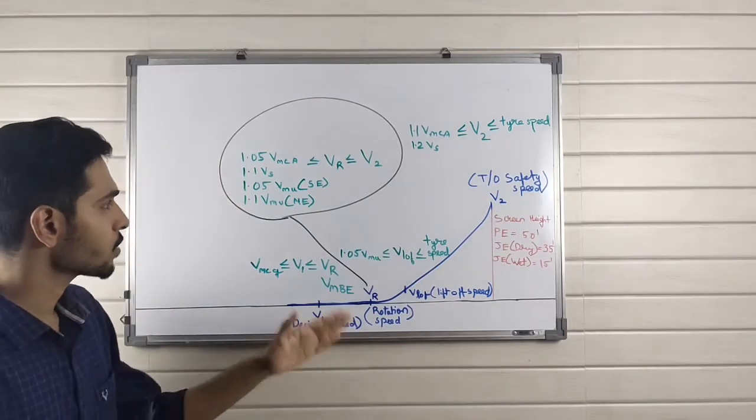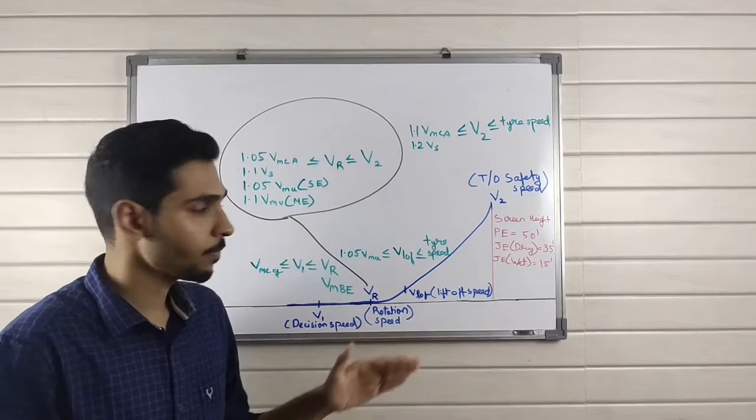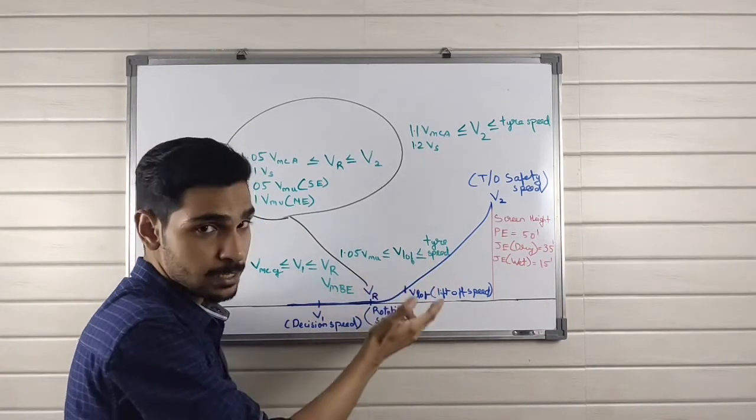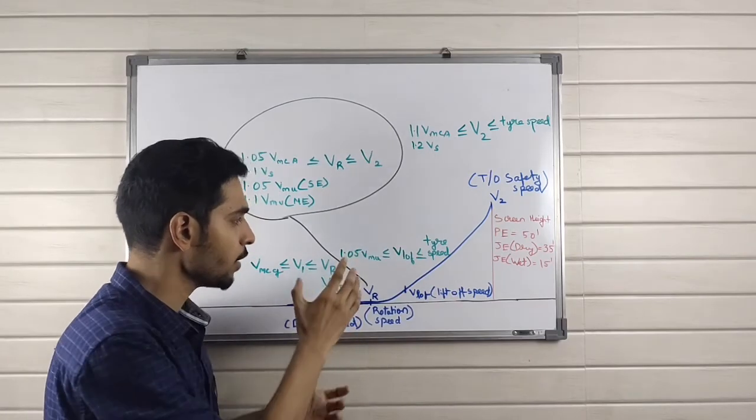Next is VLOFF. The higher limit is tire speed, and the lower limit is 1.05 VMU.